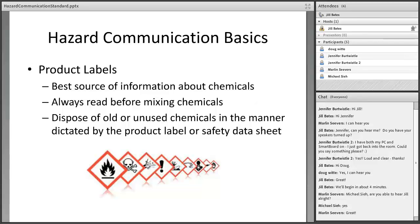Our best source of information about chemicals is probably the product label. Always read product labels before mixing chemicals together, and never dispose of old or unused chemicals before identifying the disposal manner dictated by either the label or the safety data sheet. A safety data sheet is simply a bulletin put out by the chemical manufacturer that describes the physical and health hazards of a product. A few years ago many area schools participated in a chemical cleanup program because they had old chemicals in their chemistry labs and were uncertain about how to dispose of them.